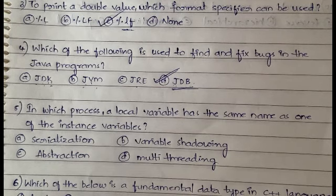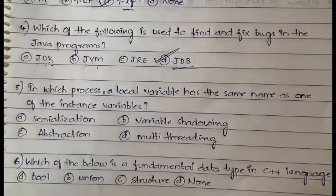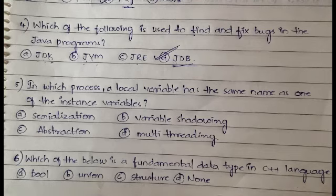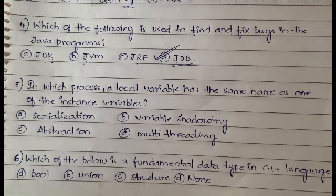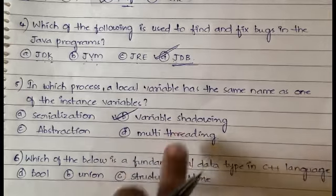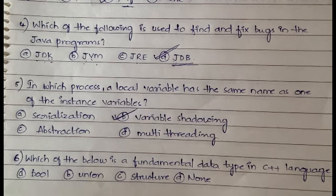In which process does a local variable have the same name as one of its instance variables? If you know about the concept of variable shadowing, you can easily answer this question. This is actually the definition of variable shadowing - when a local variable has the same name as one of its instance variables.